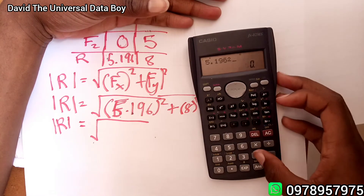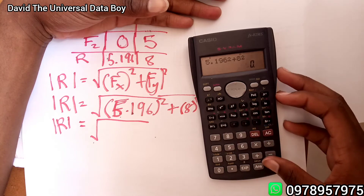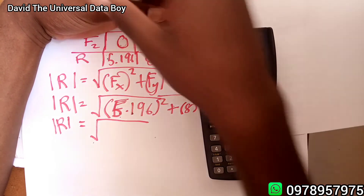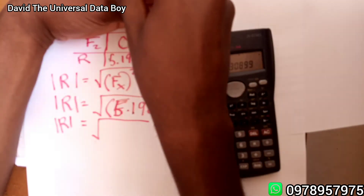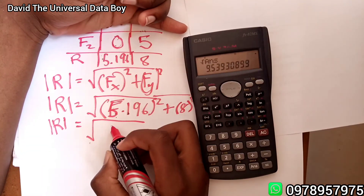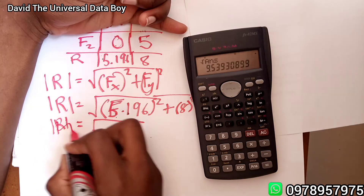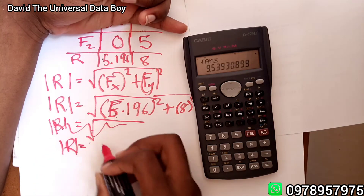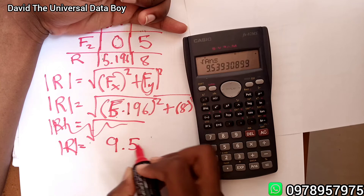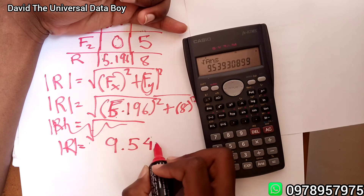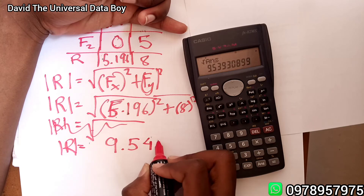Calculating: square root of (5.196 squared plus 8 squared). The square root of the answer gives us 9.54 newtons.